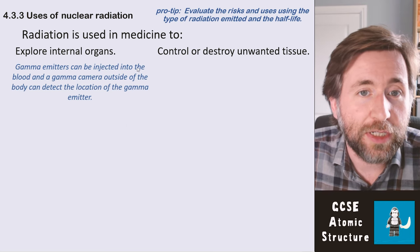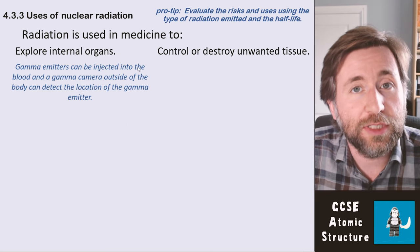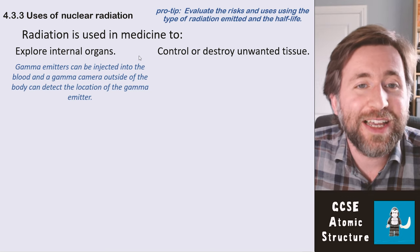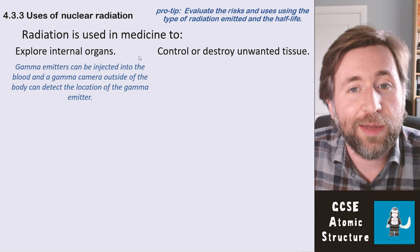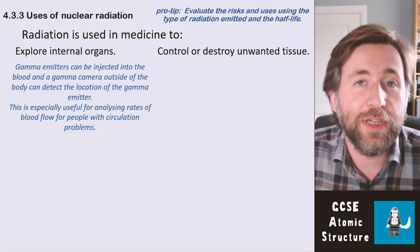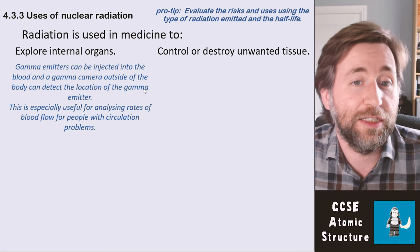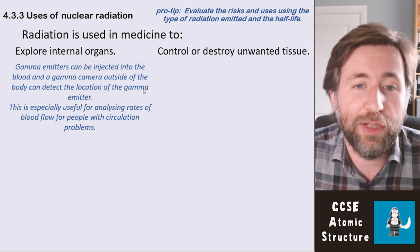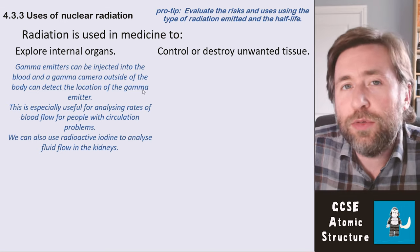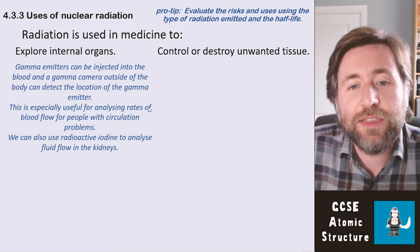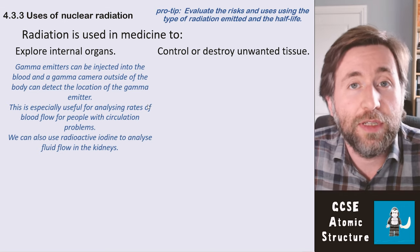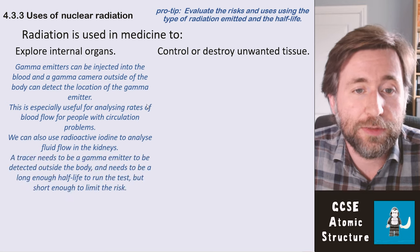We use gamma tracers to explore internal organs by injecting them into the blood, and we use a gamma camera outside of the body which can detect the location of the gamma emitter. So we can analyze rates of blood flow for people with circulation problems. We can also use radioactive iodine to analyze fluid flow in the kidneys. These are just some examples.